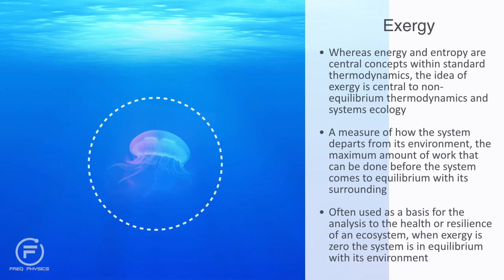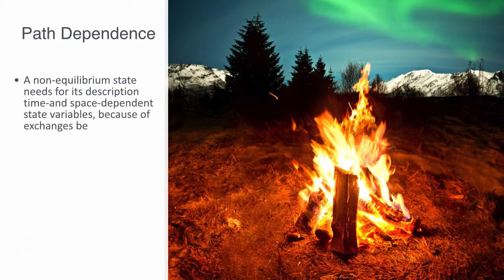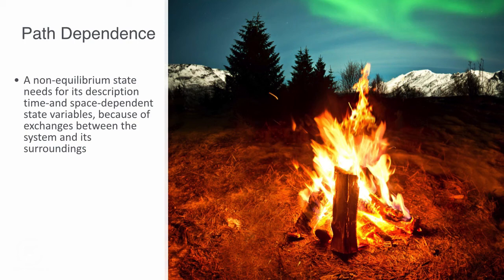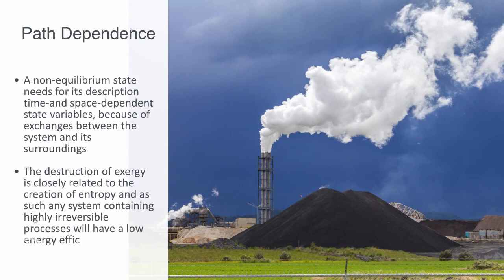When exergy is zero, the system is in equilibrium with its environment, which would equate to the complete collapse of an ecosystem. Whereas most of the laws governing thermodynamic systems are theoretically time-reversible, dissipative processes are path-dependent and irreversible. A non-equilibrium state requires time and space-dependent state variables for its description. Because of the exchanges of mass and energy between the system and its surroundings, an irreversible process is one in which free energy is dissipated. How the process was performed comes to matter. This time irreversibility is closely related to efficiency — the destruction of exergy is closely related to the creation of entropy, and thus any system containing highly irreversible processes will have a low energy efficiency. As an example, the combustion process within a power station's gas turbine is highly irreversible, and approximately 25% of the energy inputted will be destroyed in the process.